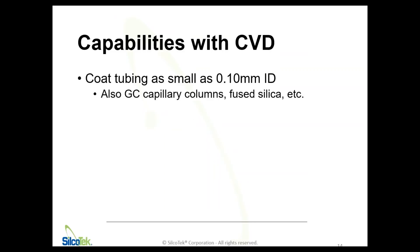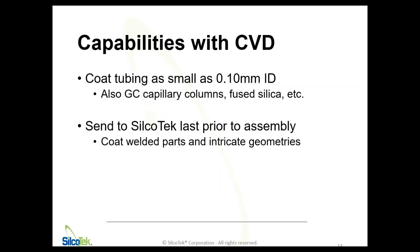Some of our capabilities: as I mentioned, we can get really narrow with tubing — we're going as small as 0.10 millimeter ID. We coat GC capillary columns, fused silica, and extremely narrow-bore tubing. In that case, we can actually connect the raw material gas line directly to the tubing and use the tubing as the processing vessel, flooding the gas through the tubing so the coating is created on the inside only. In other instances, we're putting parts into a vessel and they're coated both internally and externally. You can often send parts to us late in the supply chain, right before you assemble them. We can't coat anything assembled with seals and components inside, but you can coat welded parts and intricate geometries pretty late in the supply chain, receive them back, assemble them, and they'll be ready to install.